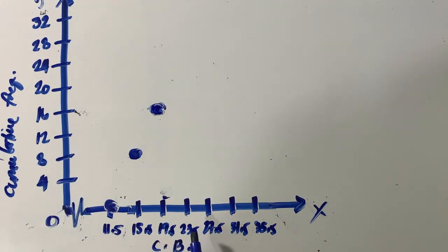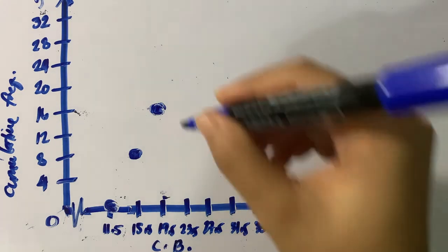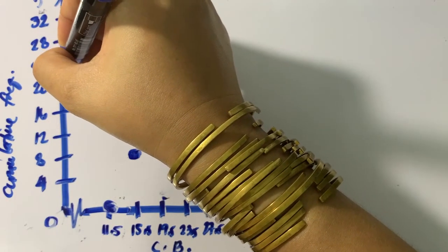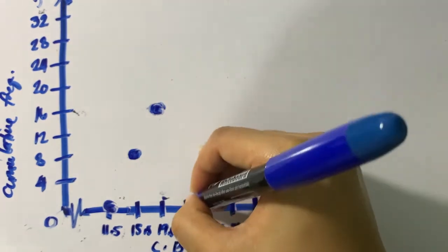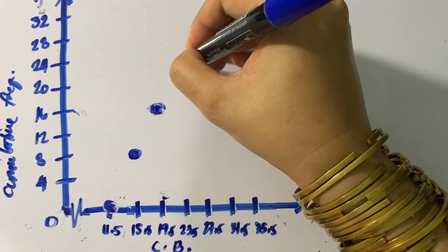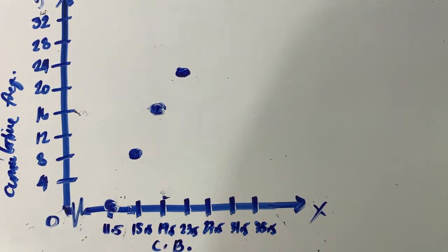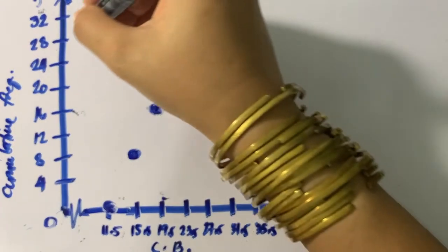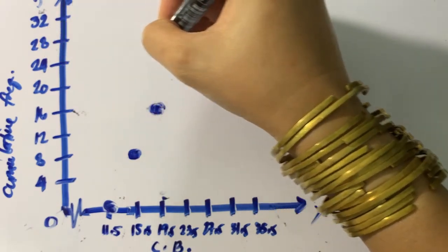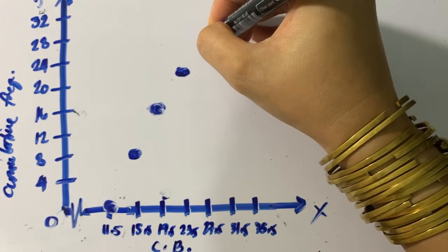When the upper class boundary is 23.5, the cumulative frequency is 23. So 23 is somewhere here and let me have this point. And at 27.5, the cumulative frequency is 26. So 26 is halfway between 24 and 28.